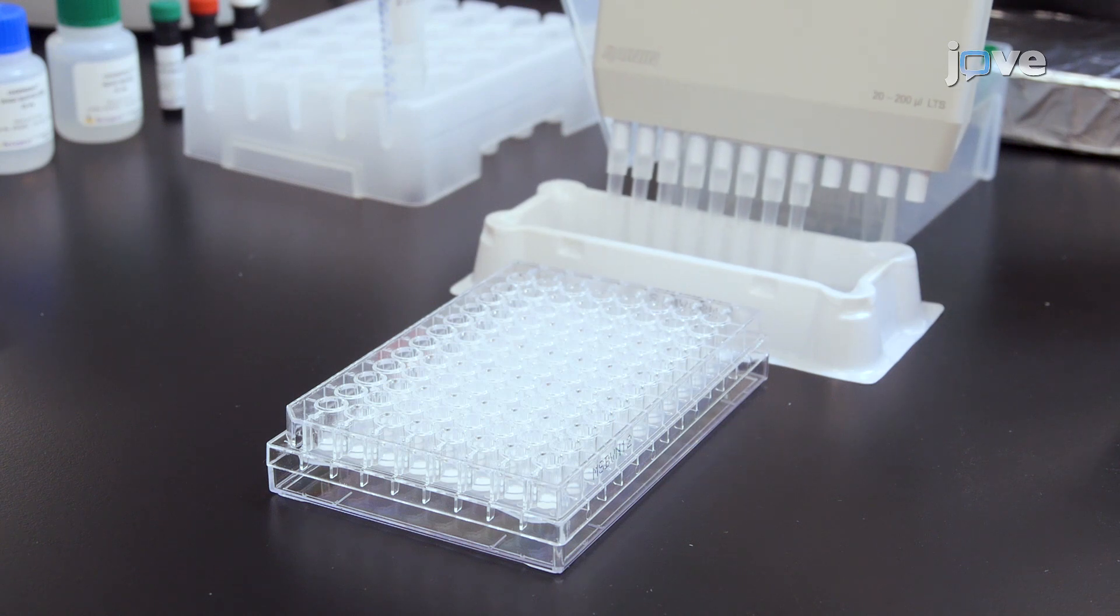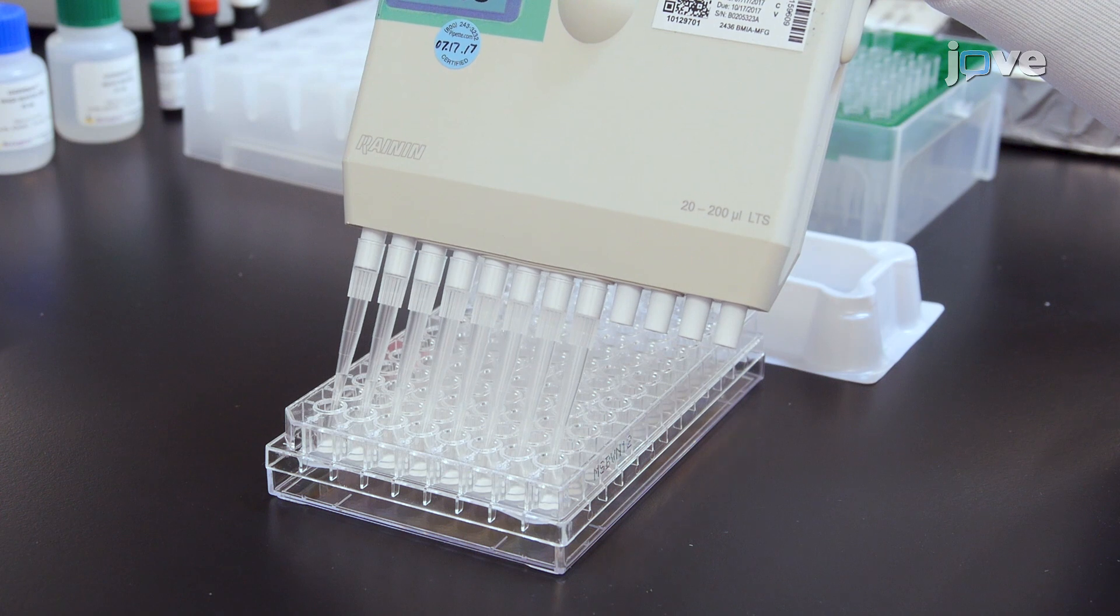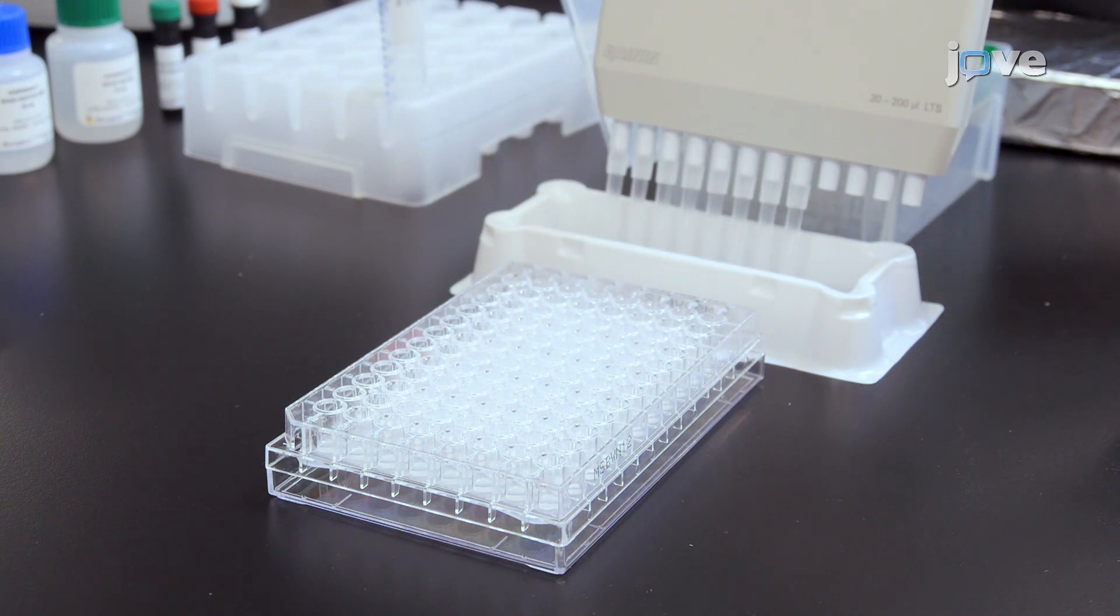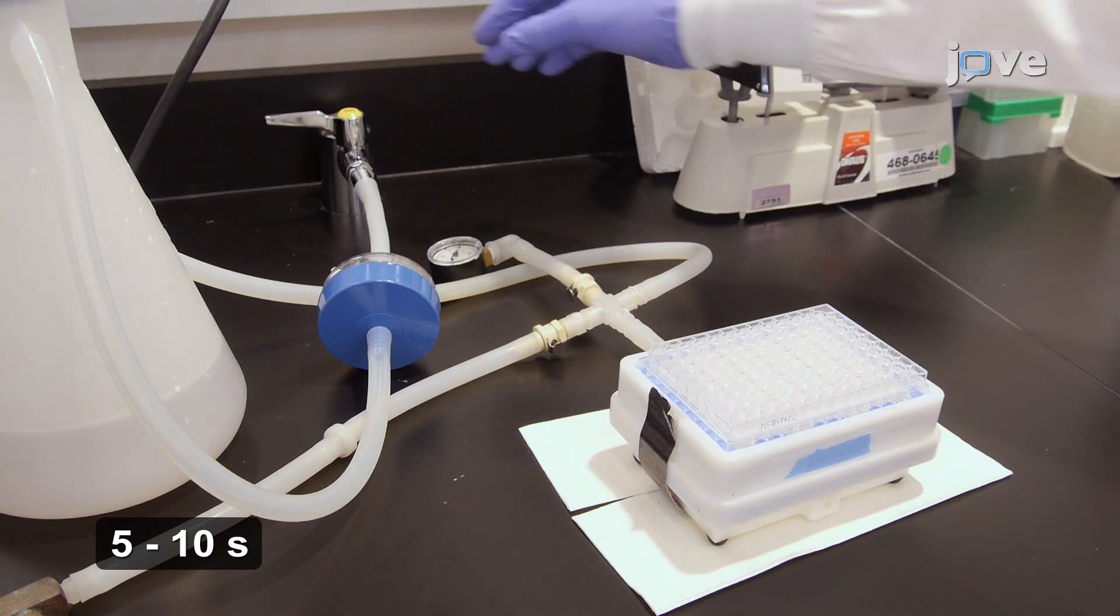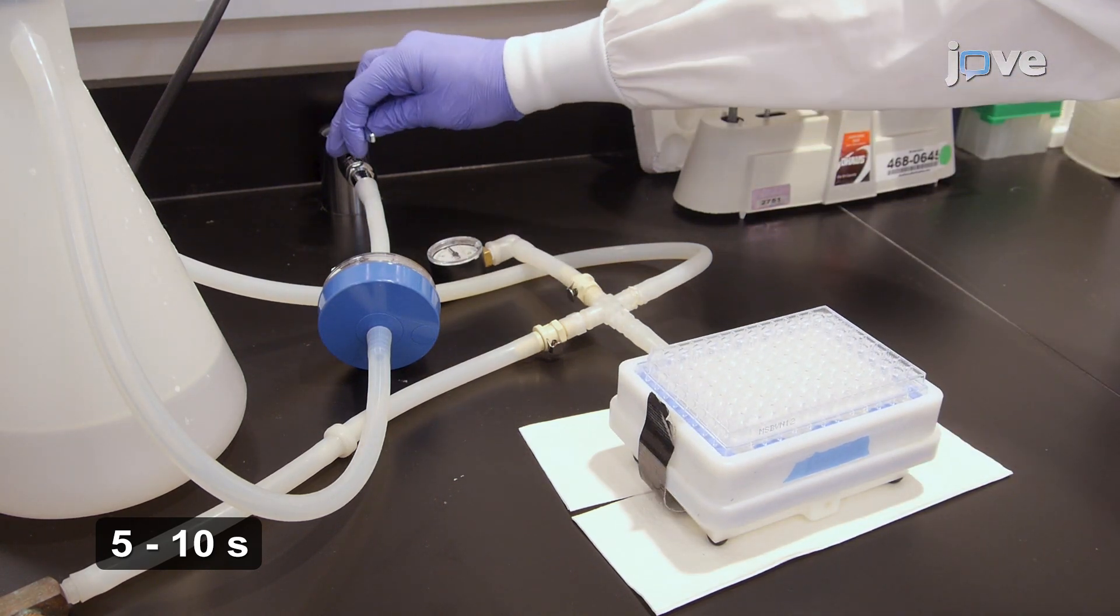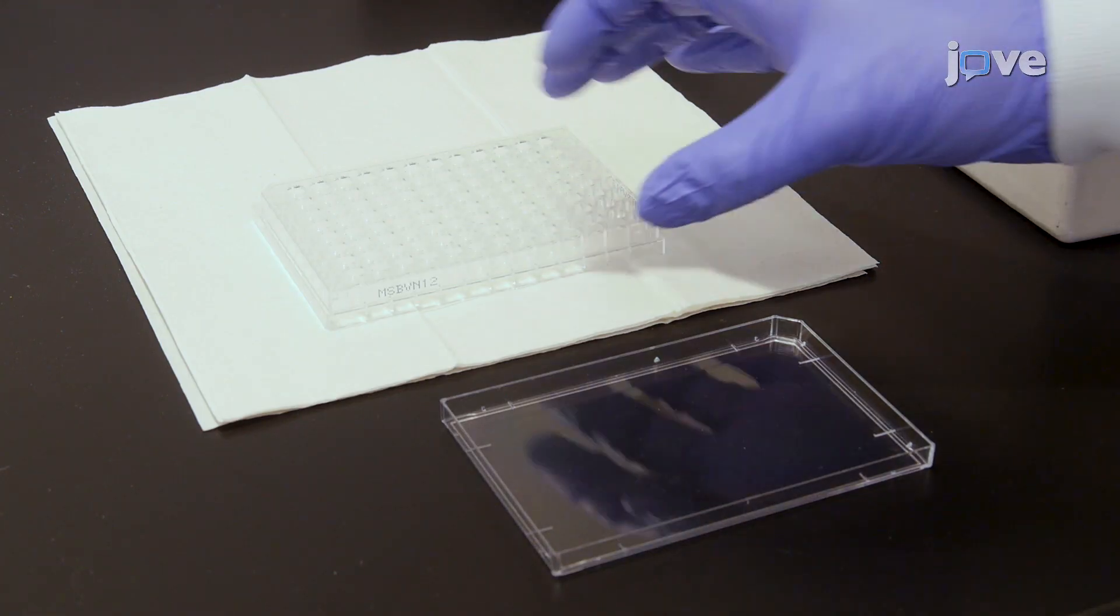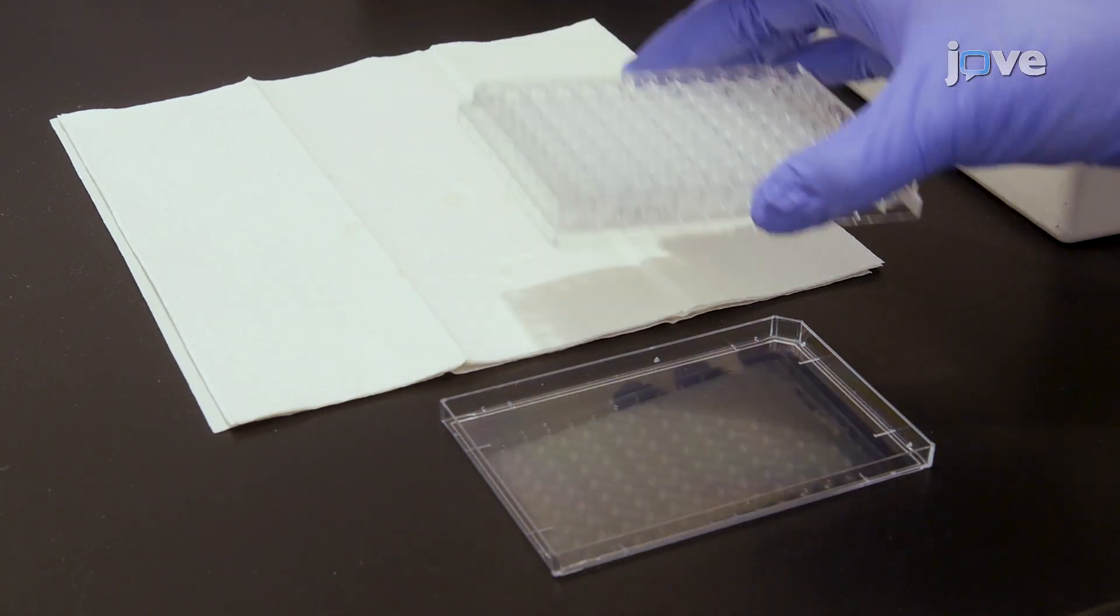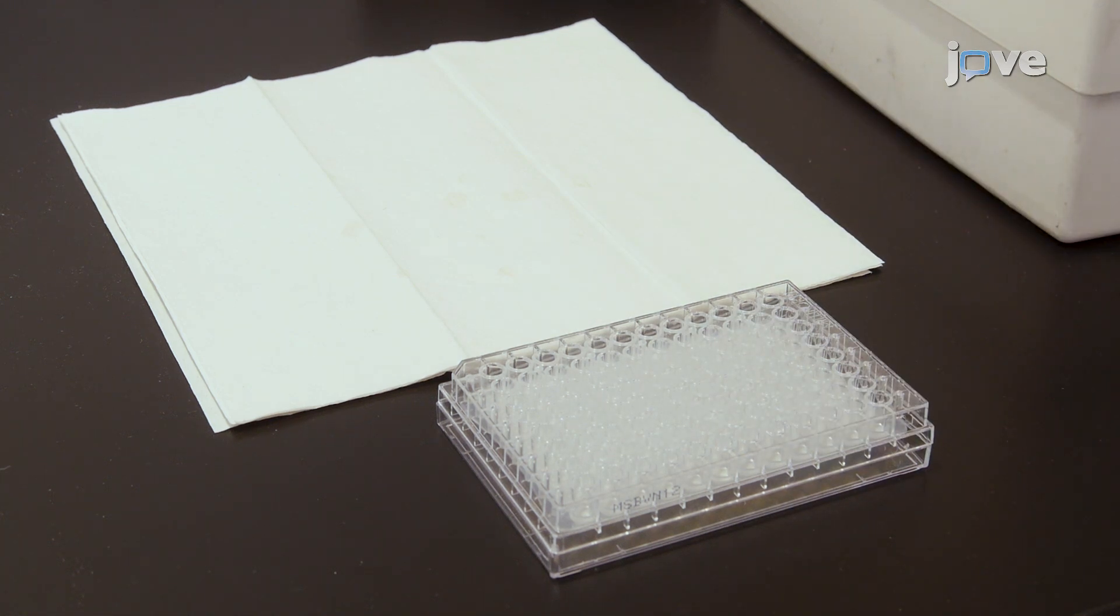Pre-wet the filter paper by adding 100 microliters of 1X wash buffer to each well and let the plate sit for one minute at room temperature. Remove the buffer volume by using the vacuum manifold. Blot excess wash buffer from the bottom of the plate by pressing the plate on a stack of clean paper towels. Then place the plate on top of the inverted plate cover.